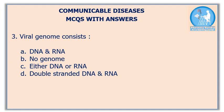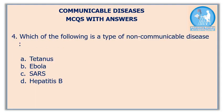The correct answer is option C: either DNA or RNA. Fourth question: which of the following is a type of non-communicable disease? Option A: tetanus, option B: Ebola, option C: SARS, option D: hepatitis B. The correct answer is option A: tetanus.